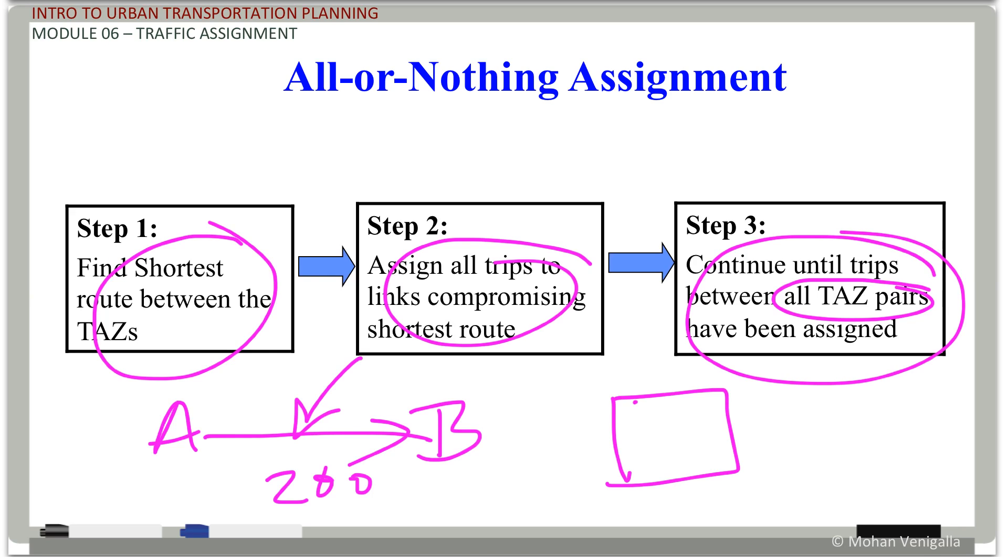So in other words, if you have a thousand by thousand matrix, you do that. You build that path tree for thousand origin zones and then loop over to get your thousand paths for each origin zone.